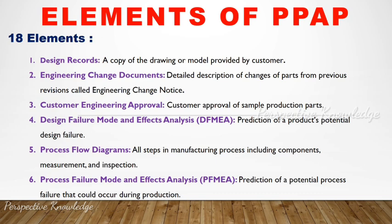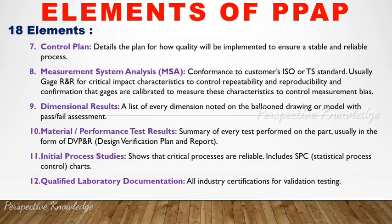The sixth element is Process Failure Mode and Effects Analysis (PFMEA) — a prediction of potential process failures that could occur during production. The seventh is the Control Plan — a detailed plan of how quality will be implemented to ensure a stable and reliable process, used to control quality through planning.